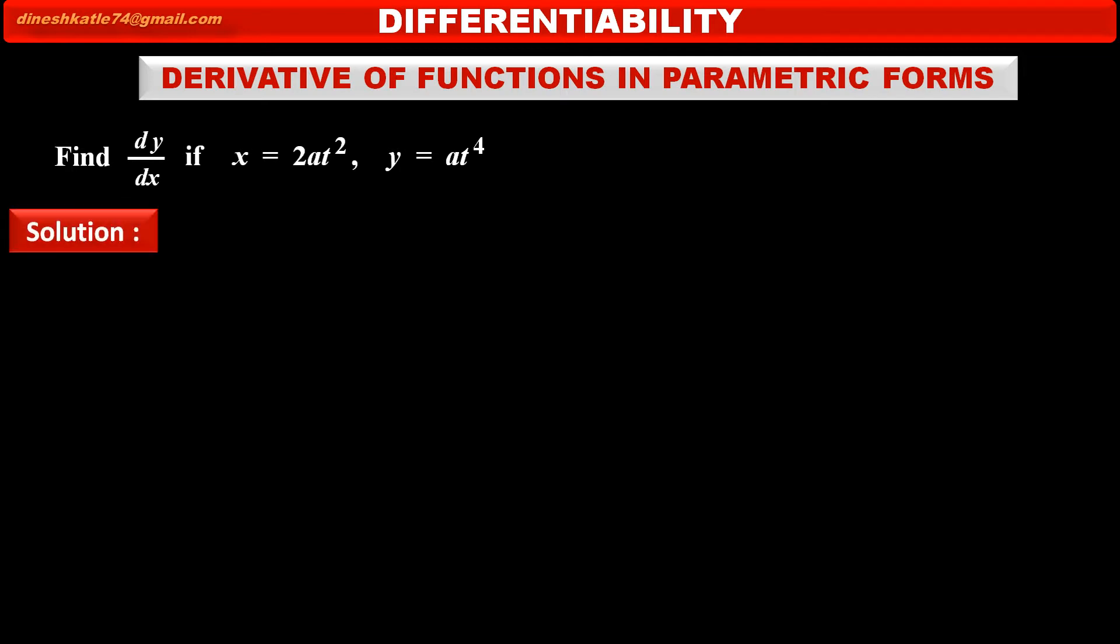See the solution. It is given that x equals 2at². Differentiating this with respect to parameter t, we get: